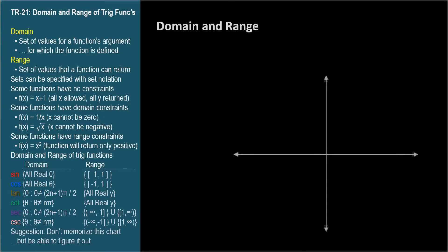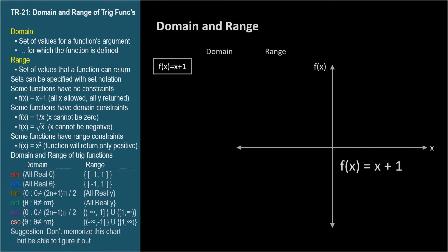For many functions, such as f(x) = x + 1, there is no constraint as to the values x can take, nor to the values the function returns. So for this function, the domain and range are both the set of real numbers.